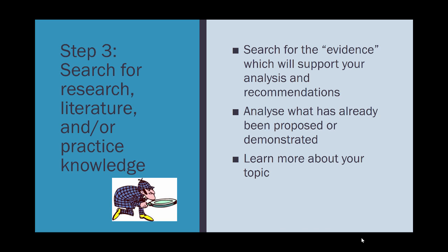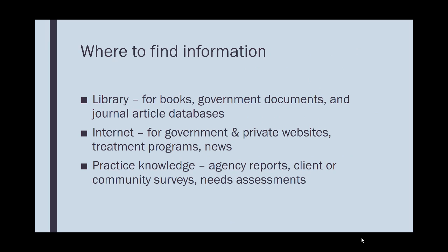Step three is to search for literature. The literature provides the evidence which will support your analysis and your recommendations. You need to analyze what's already been proposed or demonstrated, and learn more about your topic. You can find information in many places. The library has books, government documents, and journal article databases. The internet has government and private websites about treatment programs and current news. Practice knowledge can also be really important — agency reports, client or community surveys, or needs assessments can be very good data when focusing on a report about your particular region.